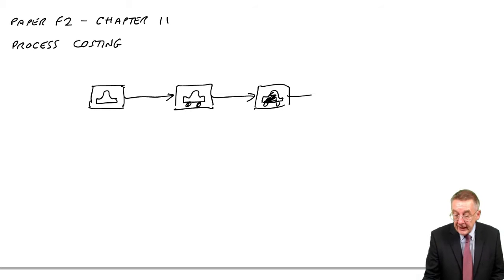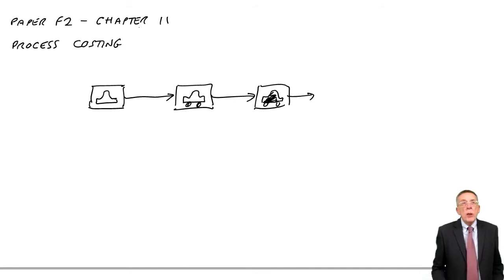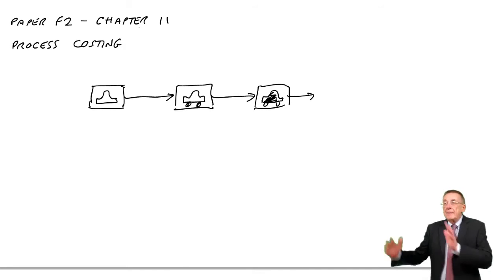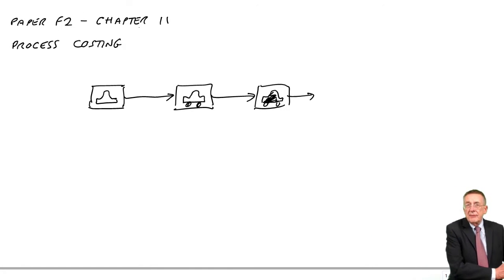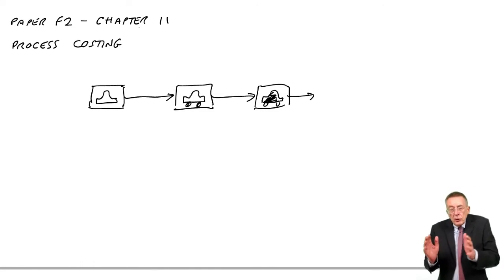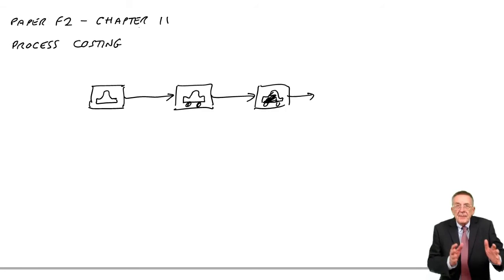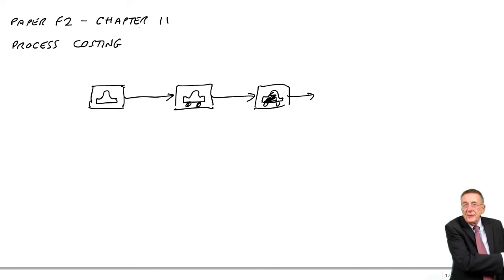Perhaps the car is then finished. They have these production lines where each room, each department is doing a different thing, and gradually the car becomes more and more towards a finished car.